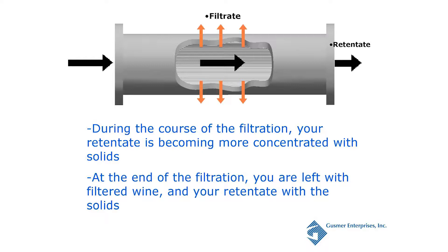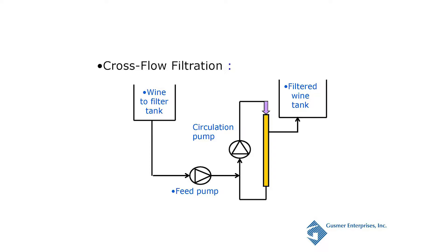This is your tank to be filtered, this is your clean wine tank. For basic design, your feed pump is normally going to be a positive displacement pump — this is your variable speed pump. This circulation pump is just circulating the wine over the modules. This is really the key pump.